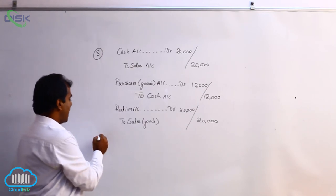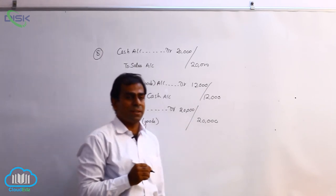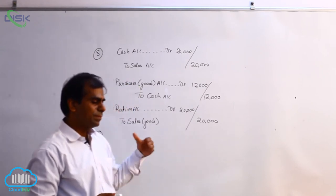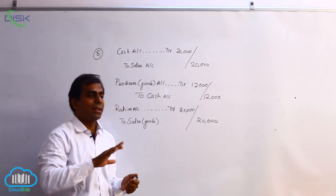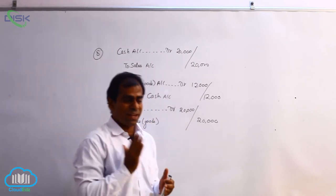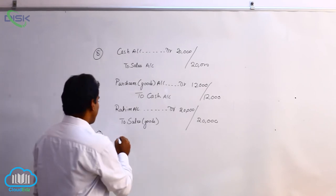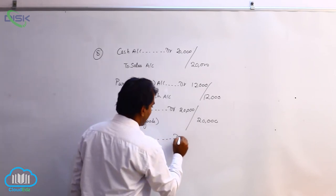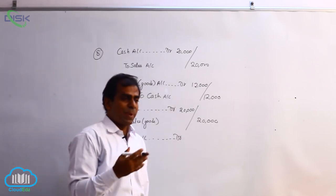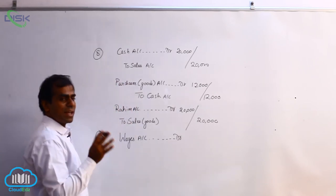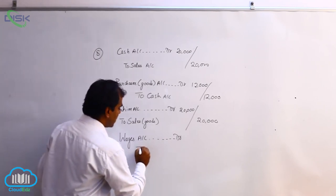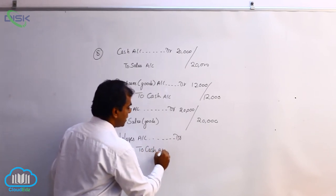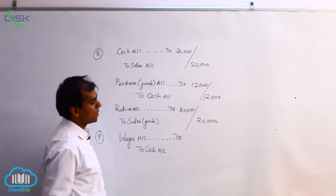On 9th, we have wages paid. Wages is an expense, and expense means it is a nominal account. The nominal account rule says debit all expenses and losses. So we debit wages — Wages Account debit. When wages are paid, cash is going out. Cash is a real account, and the rule says credit what goes out. So we credit cash. The journal entry is: Wages Account Dr to Cash Account, 5,000.